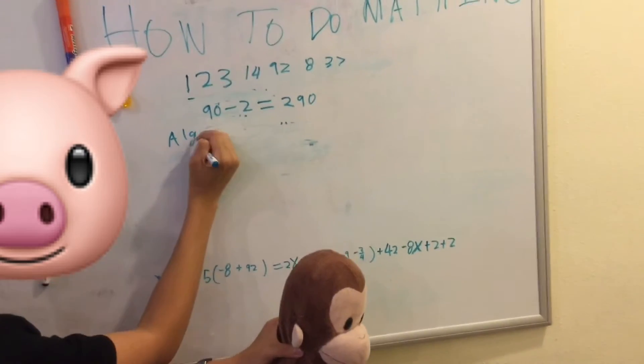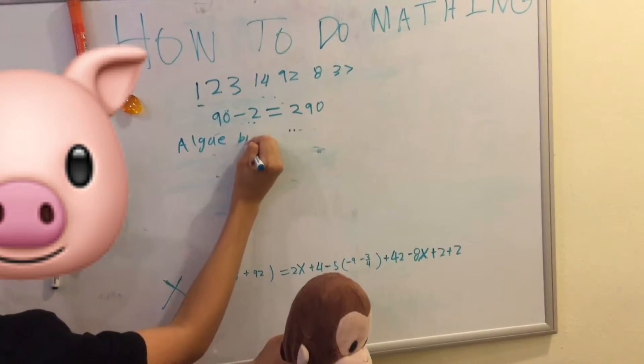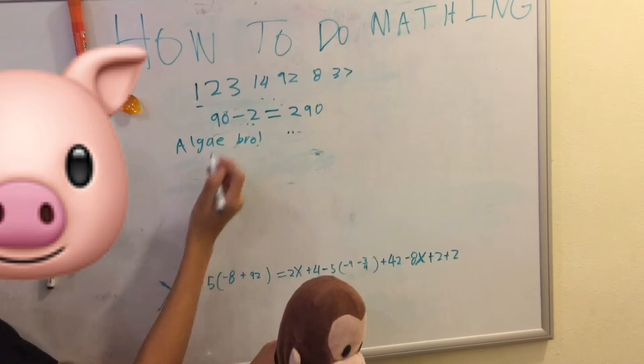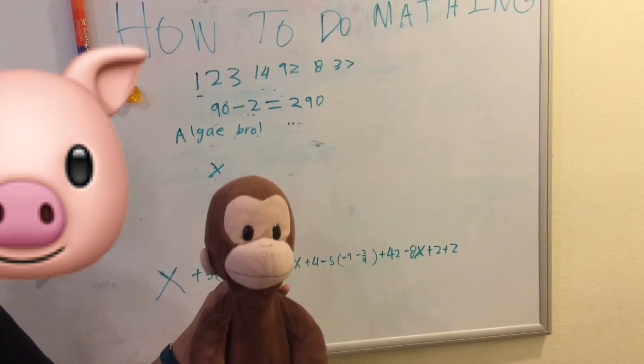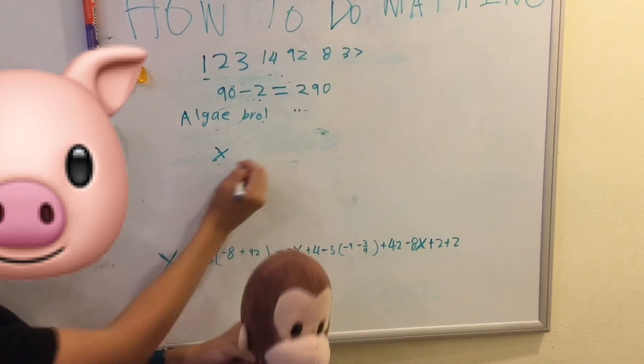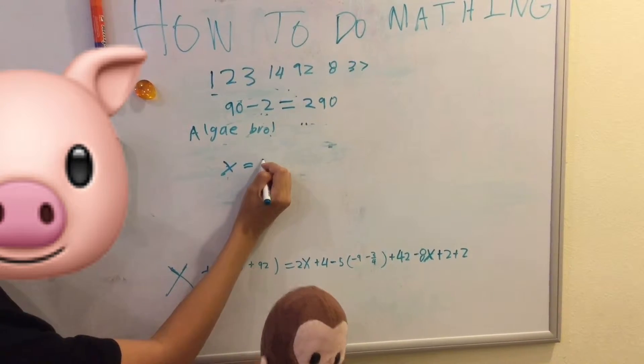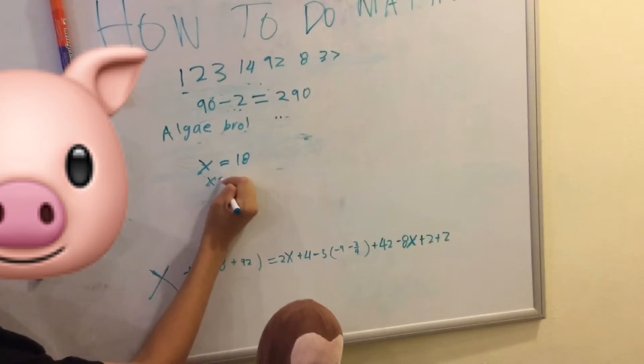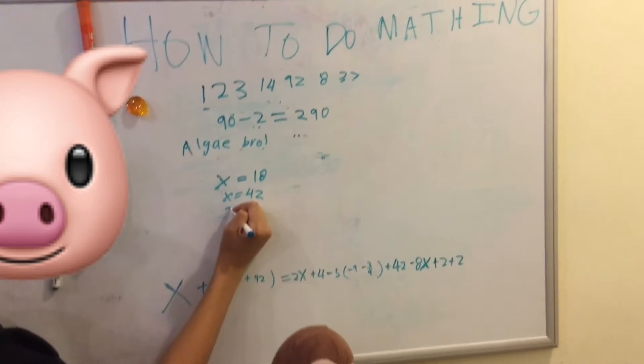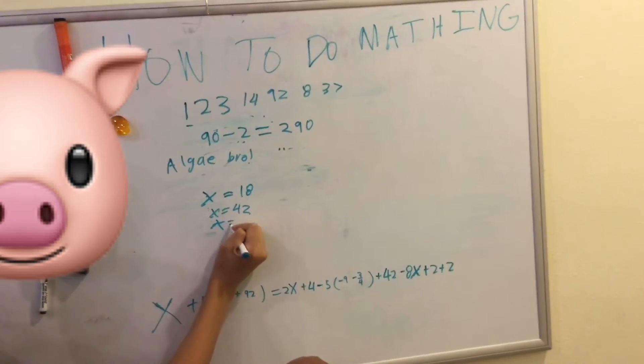Algae bro. Okay. X. What is X? X represents something. It could be X could equal 18. X could equal 42. X could equal cabbage.